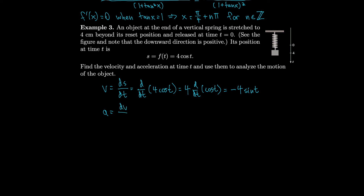Acceleration is the derivative of velocity, so the derivative of minus 4 sin t. That's minus 4 times the derivative of sine, which is cosine, but we still have the minus left over. So acceleration equals minus 4 cos t. By the position function, it goes between 4 and minus 4, since cosine ranges from 1 to minus 1. So the object oscillates from 4 centimeters to minus 4 centimeters.